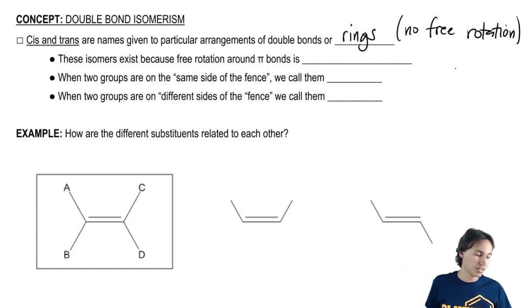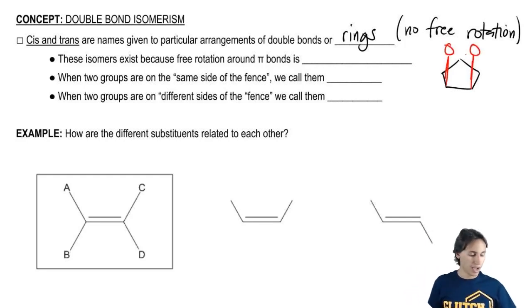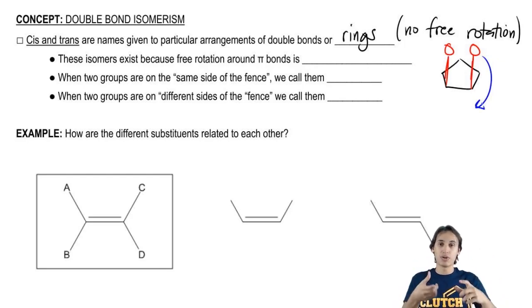In the same way, a ring has the same problem where if I, for example, have a ring that looks like this and then I have a group facing up and I also have another group facing up. Notice that this is like a 3D structure. Let's say this is one atom and another atom. See how they're both facing the same way? I can't actually rotate this one to the down position without breaking the ring because that ring, in order to move one down, it would have to snap.